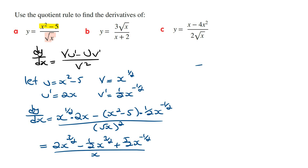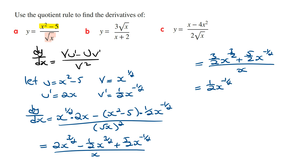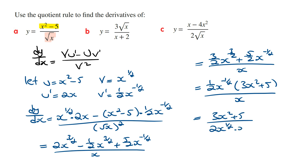Simplifying further, the numerator becomes 3 on 2 times x to the power of 3 on 2, plus 5 on 2 x to the power of minus a half, all over x. We can take out a half times x to the power of minus a half as a common factor, so the numerator is a half times x to the power of minus a half times 3x squared plus 5, all over x. For the final answer with positive powers, this equals 3x squared plus 5 over 2 times x to the power of 3 on 2.